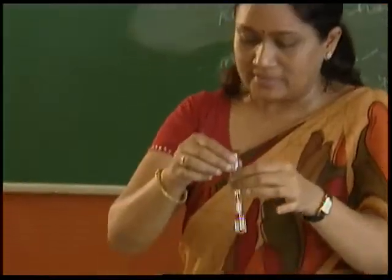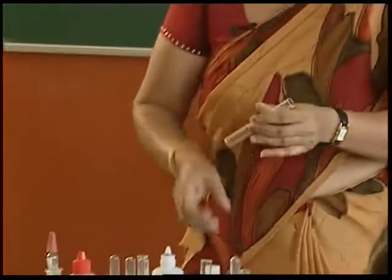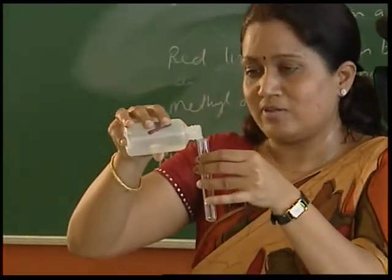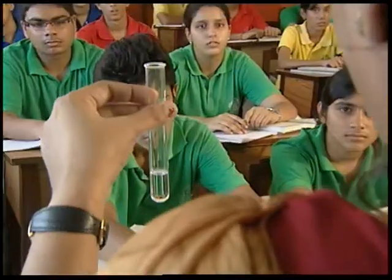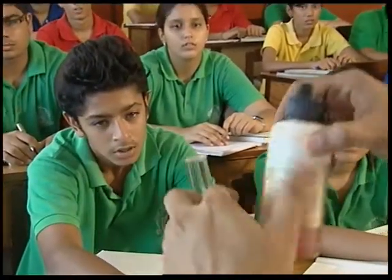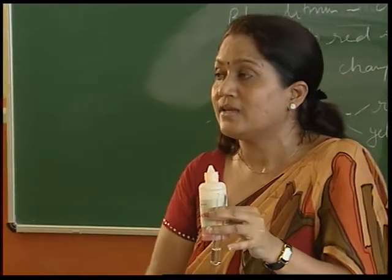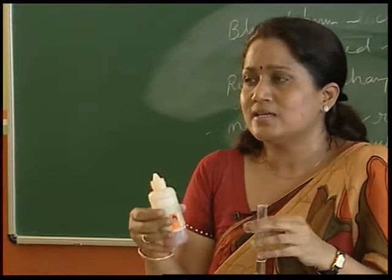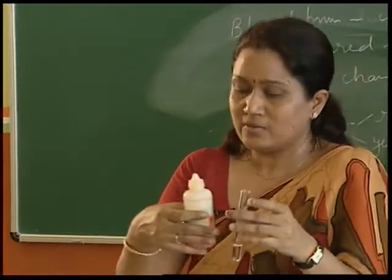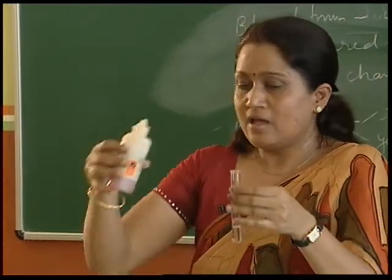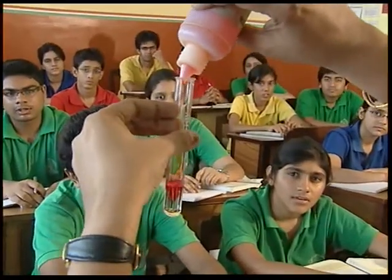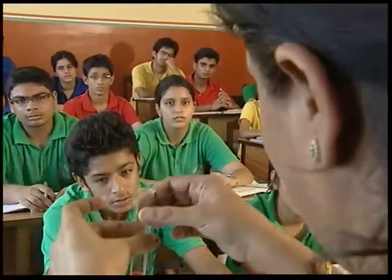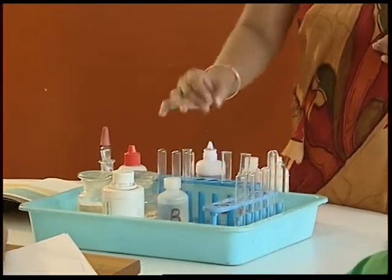To further test Sample A with another indicator, we'll use methyl orange — a synthetic indicator. Natural indicators are derived from natural sources, and synthetic indicators are chemicals which produce a color change when they react with substances. Methyl orange changes to red in acid. This also confirms that Sample A is an acid.